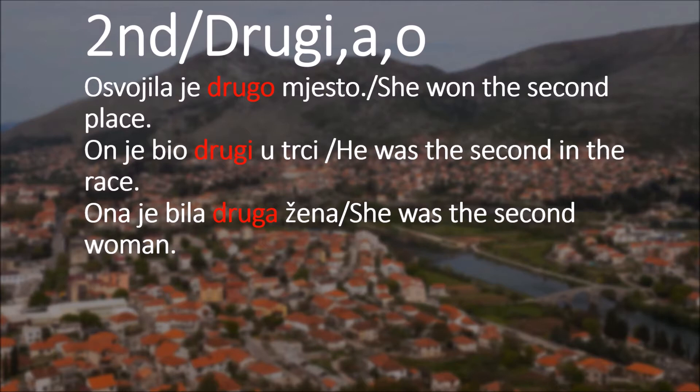In the second example: on je bio drugi u trci - he was the second in the race. We're using drugi because we're talking about him. He's our subject, we're talking about masculine, so we're using drugi.